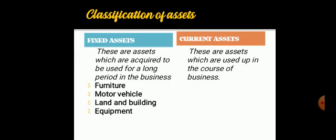Current assets, on the other hand, are used up in the course of the business. For example, your stock — the goods that the business is trading in. If you go to the market to buy 10,000 bags of cement and start selling, gradually the number of cement bags will reduce. If you do not replenish what you have sold, at some point you will have zero stock. The same with your cash: if you keep spending and do not get more, the money will get finished. Current assets include cash, stock, debtors, and bank.